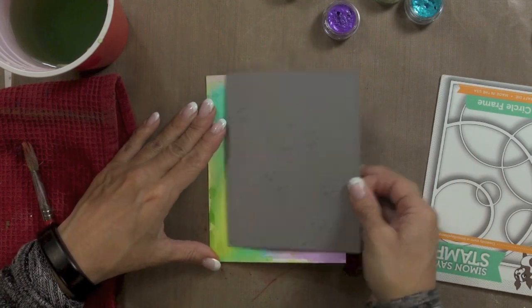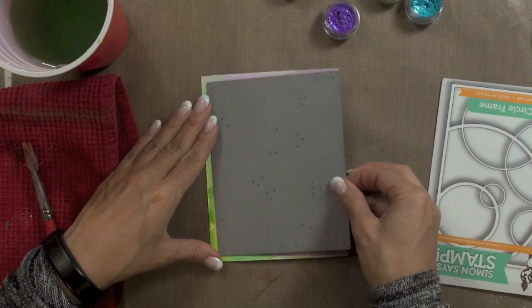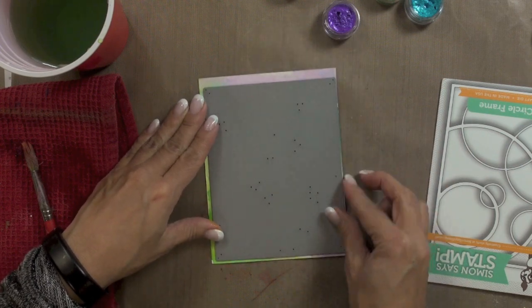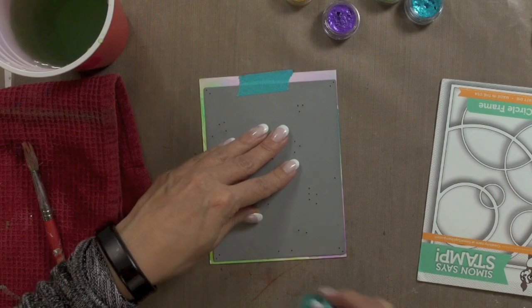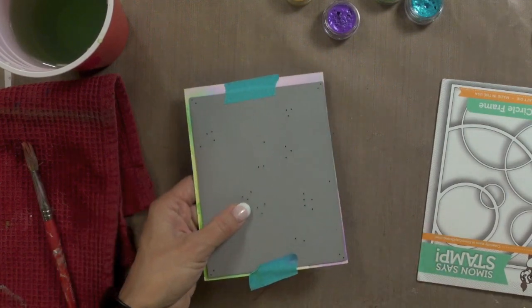I then grabbed my Simon Says Stamp mod circle frame die and placed it over top of my watercolor paper piece and just held it in place with some painters tape and then took it to my big shot and die cut it.